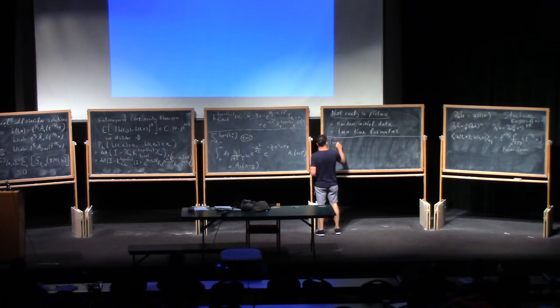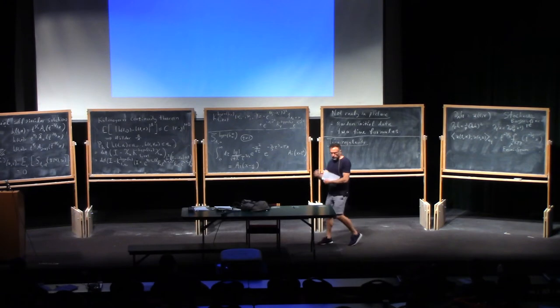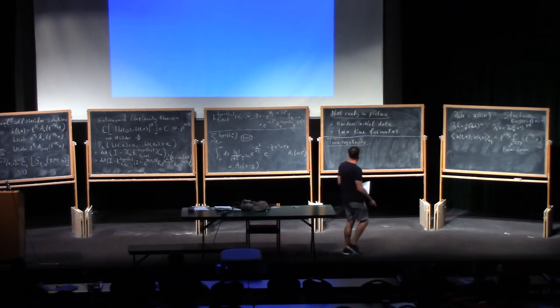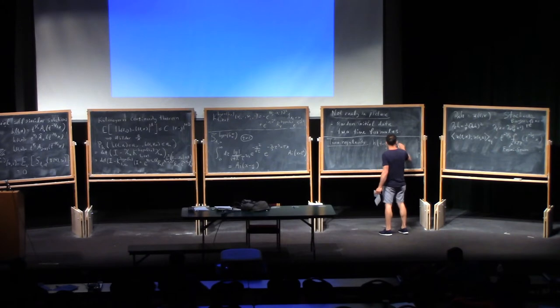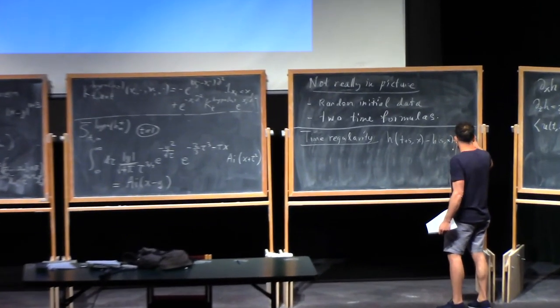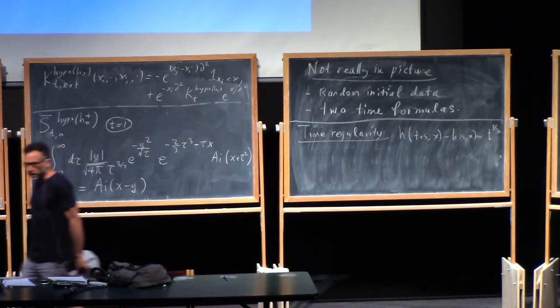So time regularity. I erased the... so it's invariant under this KPZ 1, 2, 3 scaling. And from that, it's not too hard to guess what the time regularity is. So the time regularity is, you should see that H(T+S,X) minus H(S,X) should be about T to the 1/3. That's about how big it should be. So you expect it to be a little bit less than Hölder 1/3 in time. So let's try to prove that.